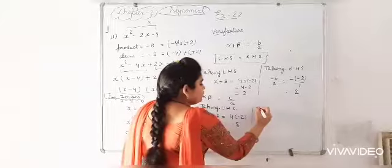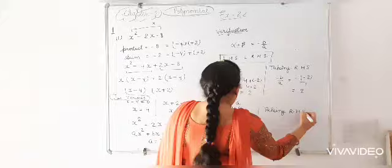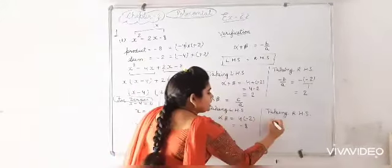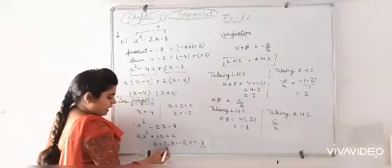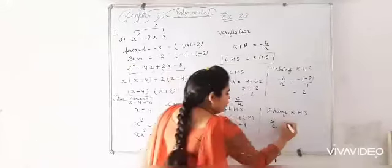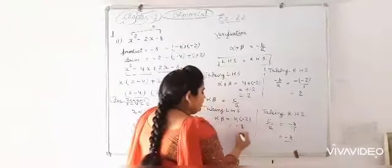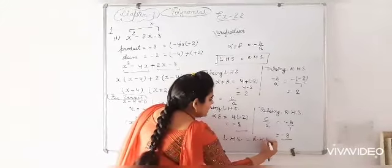And taking right hand side. Right hand side for this is equal to c by a. Here c is minus 8 and a is 1, and it will equal to minus 8 by 1. Means minus 8. Again in both cases, left hand side is equal to right hand side.